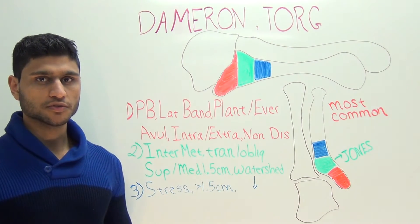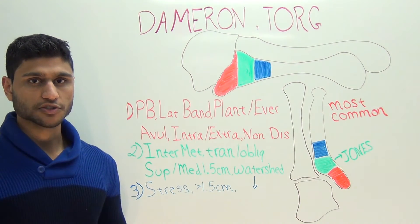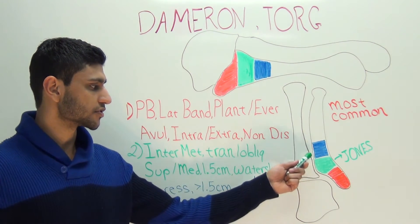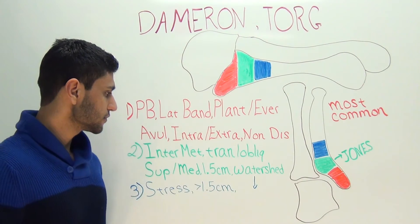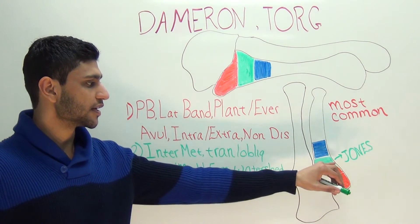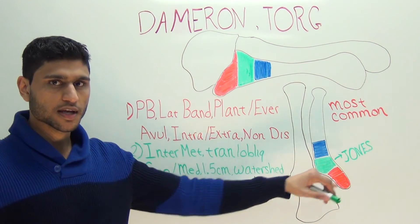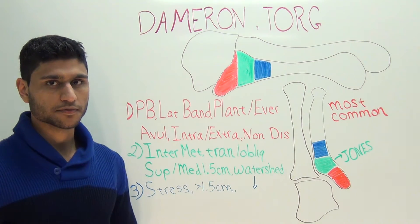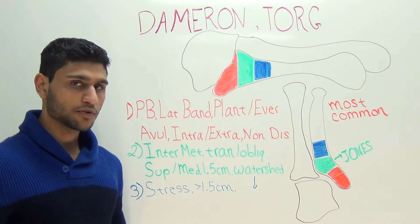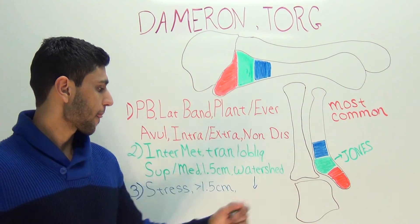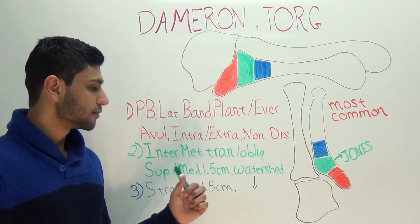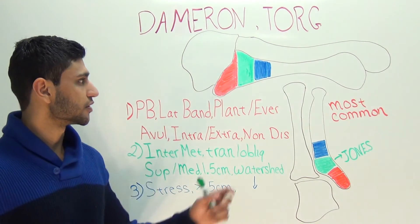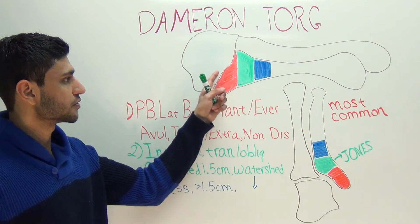Fractures in zone 2 are often known as a Jones fracture, and these occur at the level of the inter-metatarsal articulation. The fracture line begins at the lateral cortex and travels medially in either a transverse or oblique fashion, and these may or may not be intra-articular.